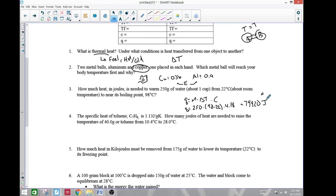The specific heat of toluene is 1.13. How much energy in joules will be needed to raise the temperature of 40 grams of toluene from 10.4°C to 28.0°C? So just more of the same here. Q equals mass times change in temperature times the specific heat. So the mass is 40 grams times change in temperature which is going to be 28.0 minus 10.4, and this guy is 1.13.